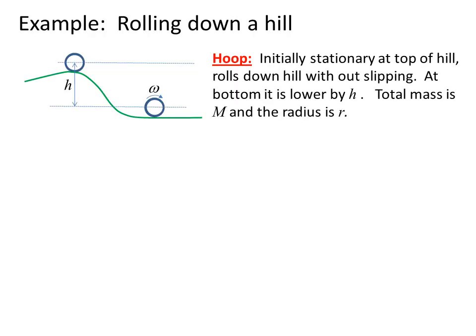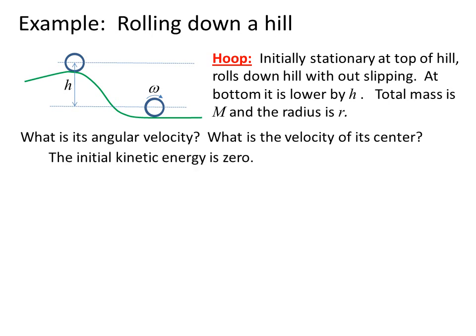Let's look at an example of rolling down a hill. We have a hoop that's initially stationary at the top of a hill and rolls down the hill without slipping. At the bottom it is lowered by a height h. The total mass of the hoop is M and the radius is r. What is its angular velocity and what is the velocity of the center of the hoop? The initial kinetic energy is zero. The final potential energy for the hoop-earth system is zero, or we can set it to be that.